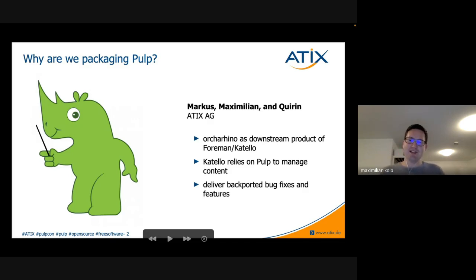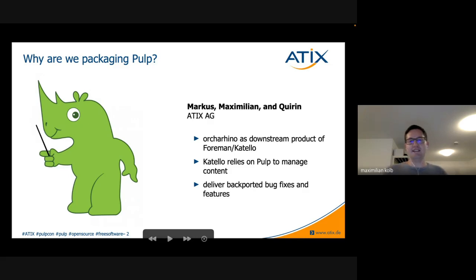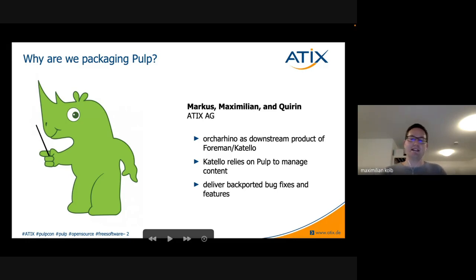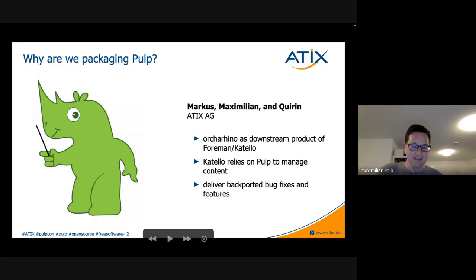We work at Attics creating and providing a commercial downstream product based on Foreman and Katello. As you know, Katello relies on Pulp to manage content. Our developer experience mostly focuses on Pulp inside Katello. Developing is only half the battle — you also need to package it. For us, developing means cherry-picking bug fixes, backporting them, backporting features, or adding our own changes.